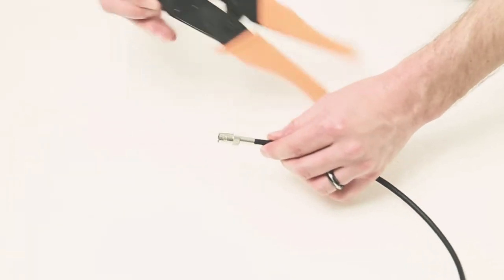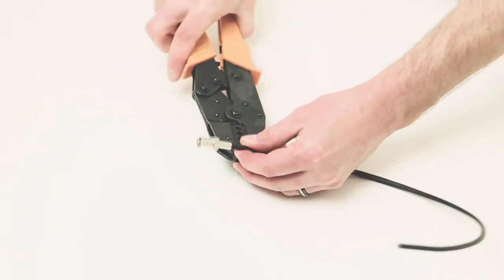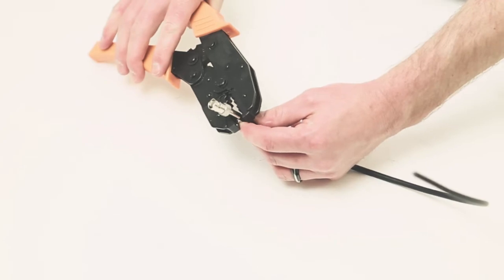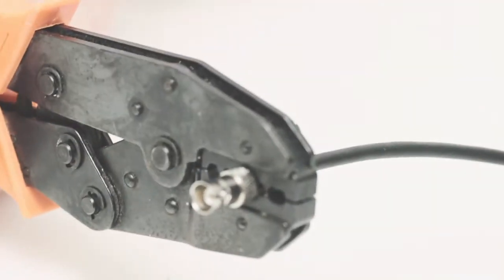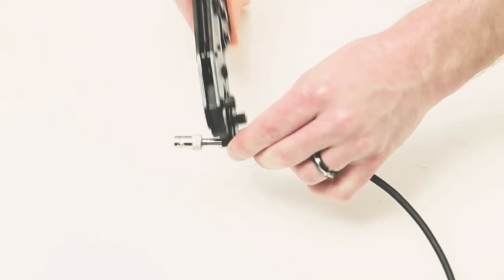Now you're ready to crimp. With adequate pressure, crimp the ferrule onto the jacket. This compresses the ferrule, pinching it against the jacket. This creates a secure and lasting connection.